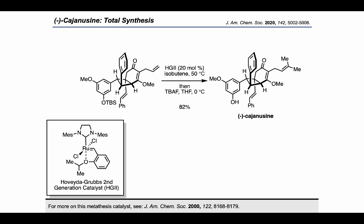Finally, cross-metathesis with Hoveyda–Grubbs second-generation metathesis catalyst and isobutylene, followed by TBAF deprotection, gave the final target, cajanacine.